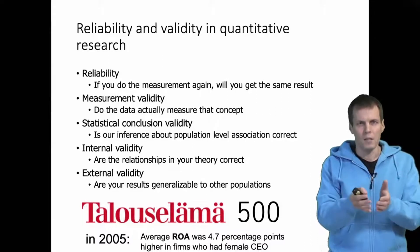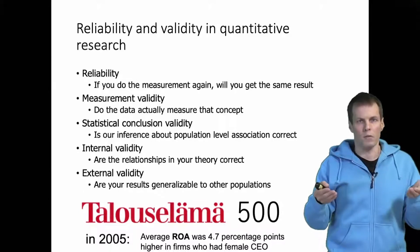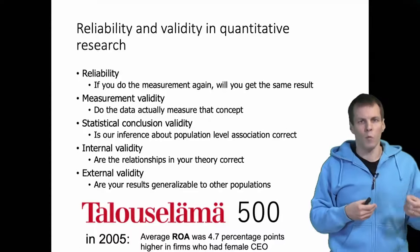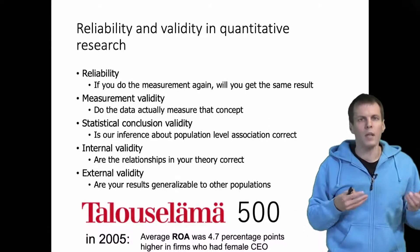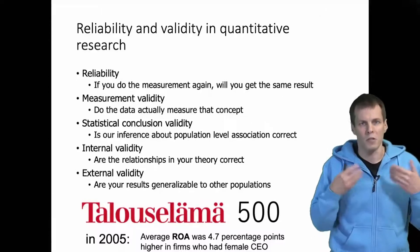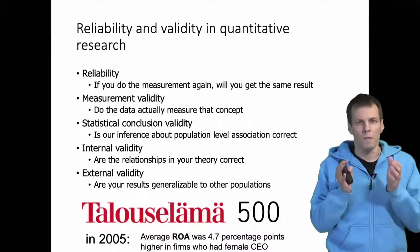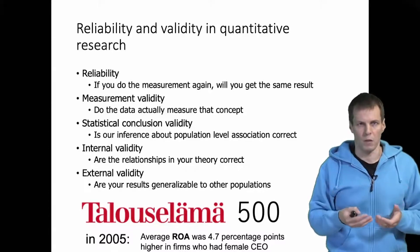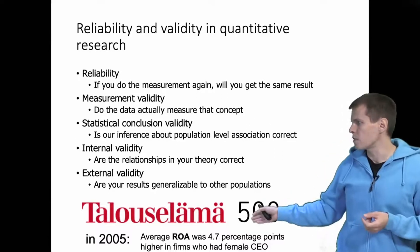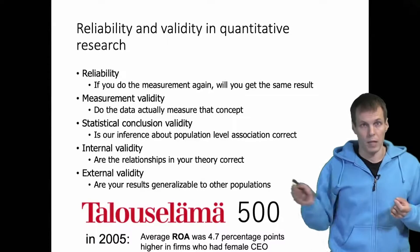We have four different aspects of validity. The first is measurement validity: do the data we have actually measure what they are supposed to measure? For example, in the Talouselama 500 study where we were interested in whether naming a woman as a CEO causes profitability to increase, we need to consider whether return on assets is a valid measure of profitability. Statistical conclusion validity refers to whether we have identified the association correctly — is it possible that the 4.7 percentage points difference is only due to chance, or is it evidence of a systematic difference?